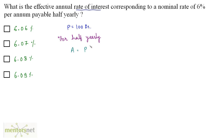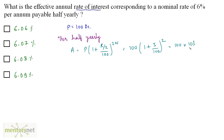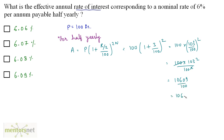The amount is equal to P into 1 plus — since it is payable half yearly, the rate becomes half upon 100, raised to a time period that becomes twice. So the principal is 100 rupees times 1 plus 6 by 2, that is 3 upon 100, raised to 2. That's 100 into 103 by 100, raised to 2, which gives 103 squared upon 100. So 103 squared is 10609 upon 100, and that's 106.09.